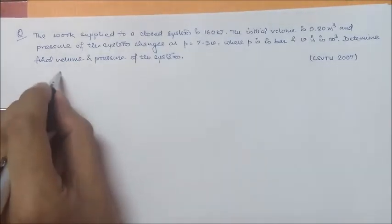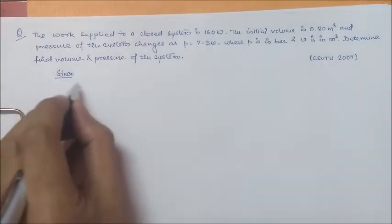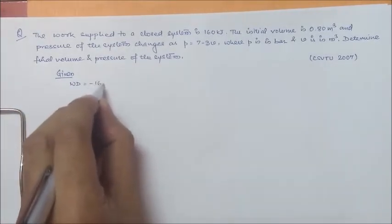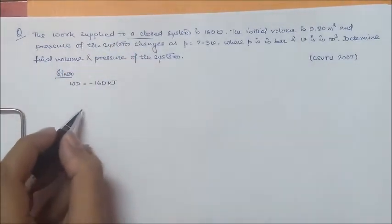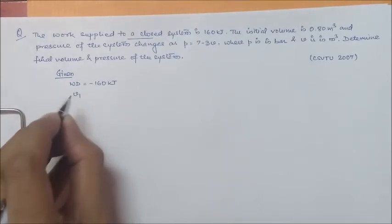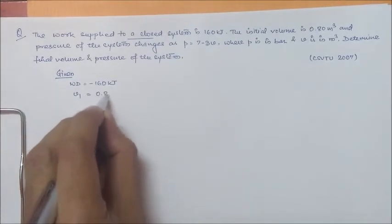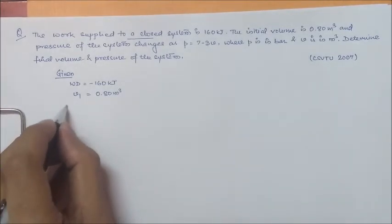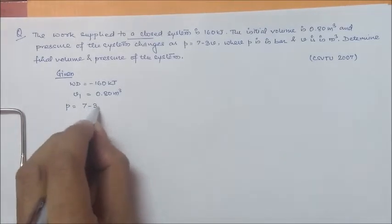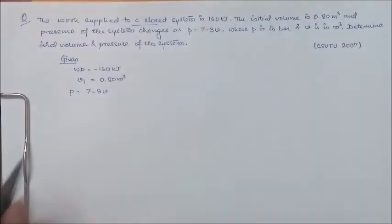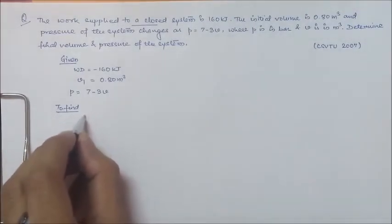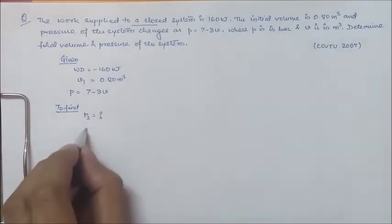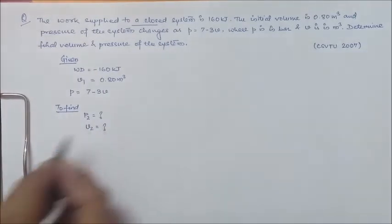So first we will start with the given values. Work done is minus 160 kilojoule — minus because work is supplied to the system. Initial volume V1 is equal to 0.80 meter cube, and we have P equal to 7 minus 3V. We have to find final pressure P2 and final volume V2.